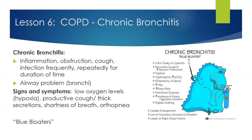Chronic bronchitis is another component of COPD — caused by chronic inflammation, chronic irritation, and recurrent infections of the larger airways, whereas emphysema affected those alveoli. Signs include low oxygen levels (hypoxia), a productive thick secretion, shortness of breath, and orthopnea — difficulty breathing when lying down. The chronic bronchitis patients are those blue bloaters. They have exertional dyspnea, use of accessory muscles, low oxygen levels, thick cough secretions, shortness of breath, and orthopnea.